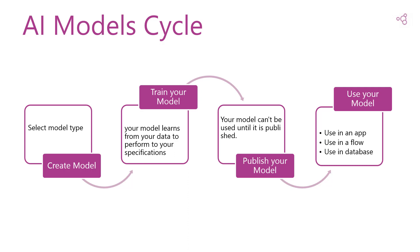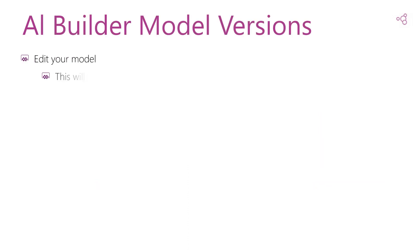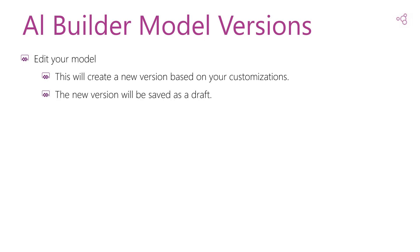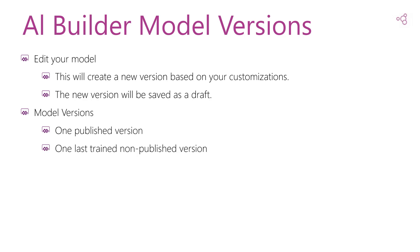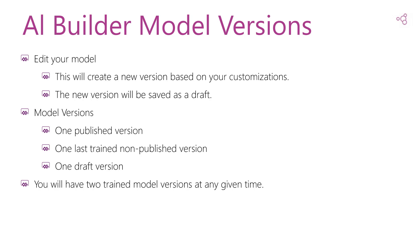Let's learn about model versions. Every time you edit your model, this will create a new version based on your customization. The new version will be saved as a draft so you can return later to your saved work. There are three versions of your model: the published version, the last trained and unpublished version, and the draft version. At any given time, you will have two trainable model versions: the draft and the last trained version.